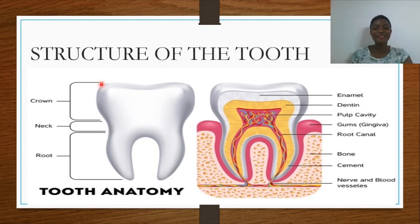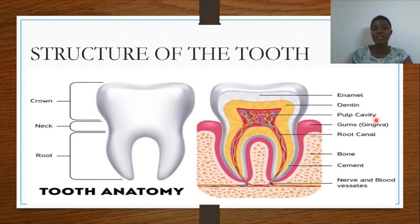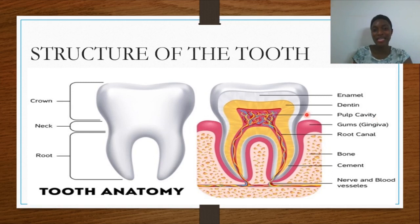The enamel is found at the crown region. The tooth is divided into three regions: the crown, which is the topmost region; the neck, in between; and the roots at the bottom. Beneath the enamel you find the dentine, and the dentine covers about half of the tooth structure. Beneath the dentine you have the pulp cavity.